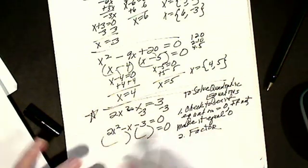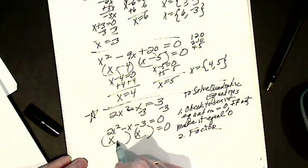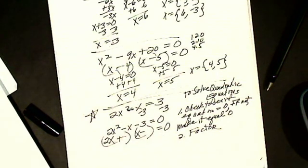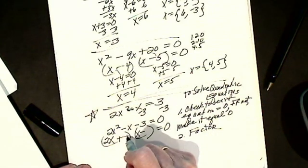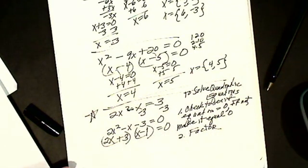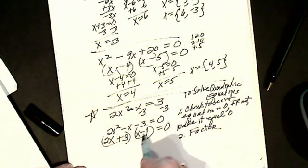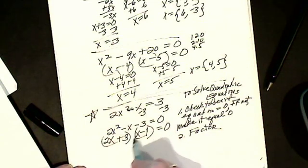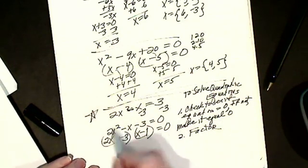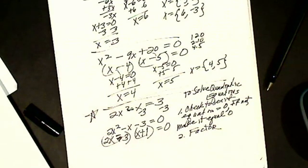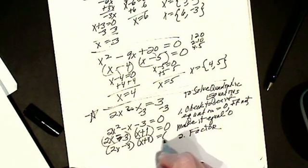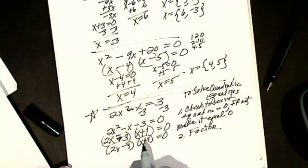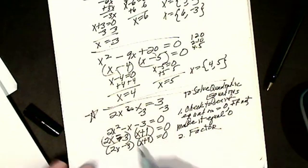This one has a coefficient in front, so by trial and error: x, x — plus, minus. It has to be 2 and 1 for the x terms, and 3 and 1 for the constants. But they have to be in the right spots to get minus 1x. I'll put my 3 here and my 1 here. If I FOIL this, I get minus 2x plus 3x which gives plus 1x — but I want a minus, so I'm off by a sign. I've got to change to minus 3 and plus 1. Now I have (2x minus 3)(x plus 1) equals 0. Checking: plus 2x minus 3x gives minus 1x.